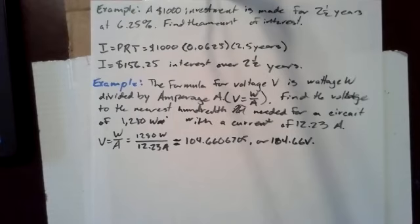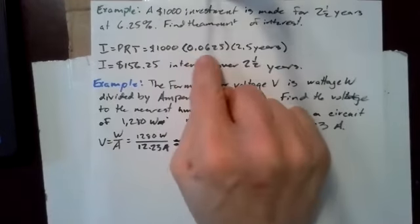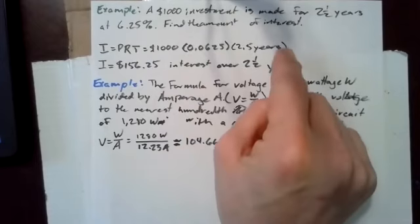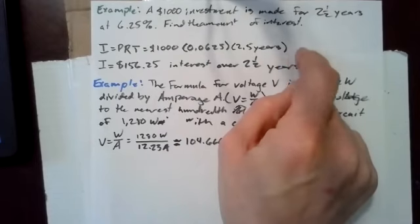The principal is $1,000. The interest rate is 6.25, which is 0.0625, and the time is 2.5 years.